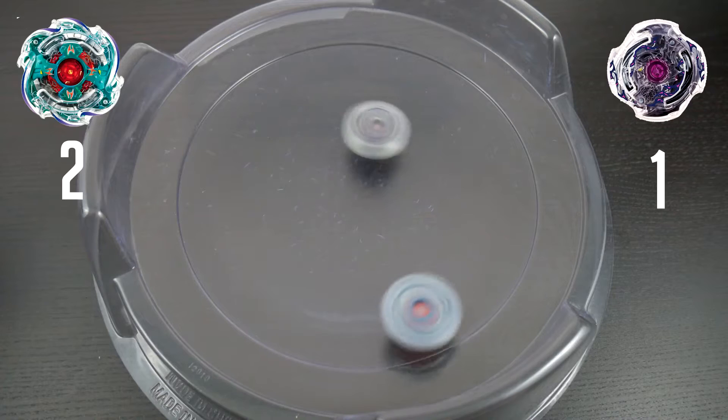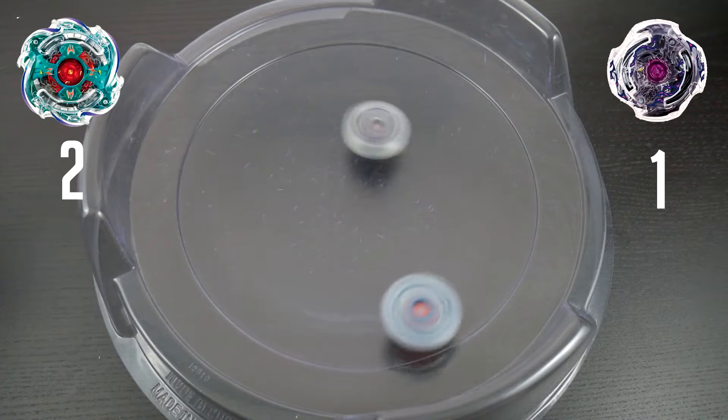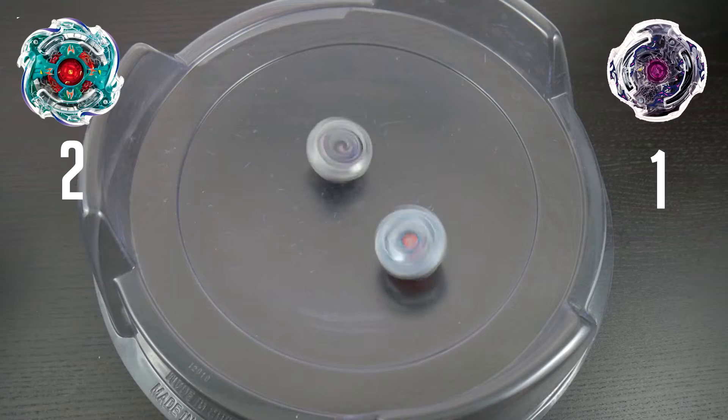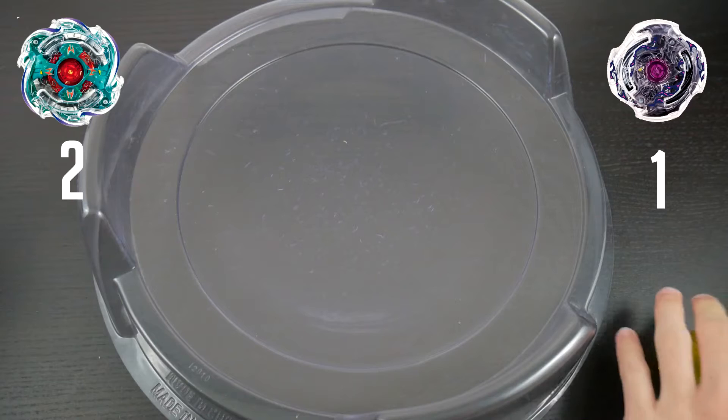Death Scyther is kind of keeping into the middle. Neptune is just kind of going around him. They're getting some decent hits here. Will Death Scyther be able to prevail? Who knows? It'll be pretty close. And it is, yet again, a direct tie. Neither one winning the match.